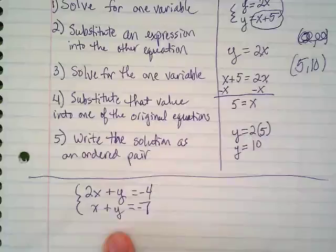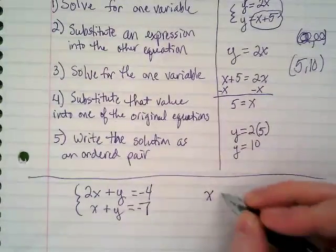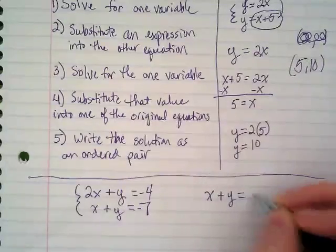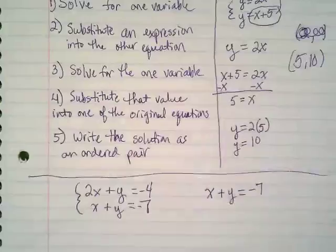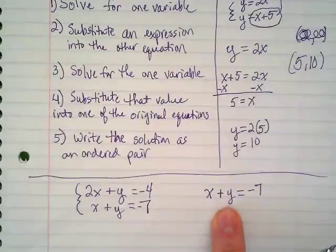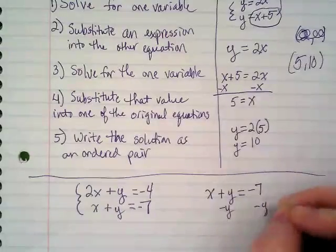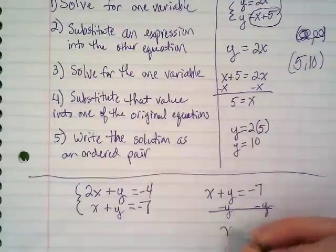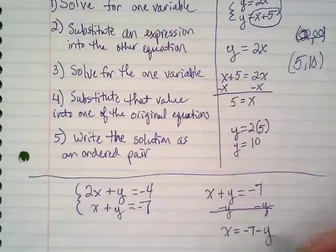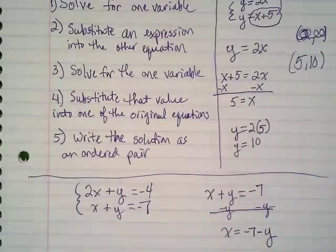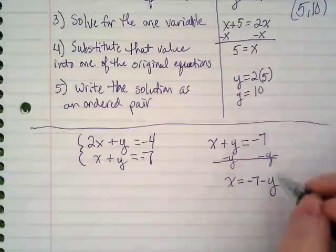We always solve for y because of y equals mx plus b. So let's solve for x. I'm going to rewrite this equation as x plus y equals negative 7. And if I'm going to solve this for x, I'm going to have to subtract the y. And I get x equals negative 7 minus y.